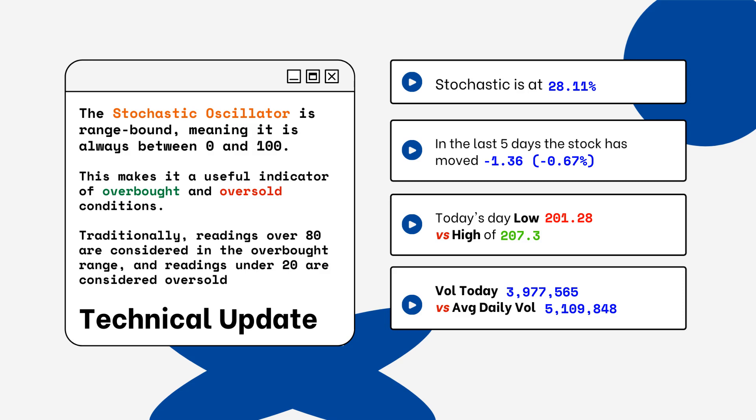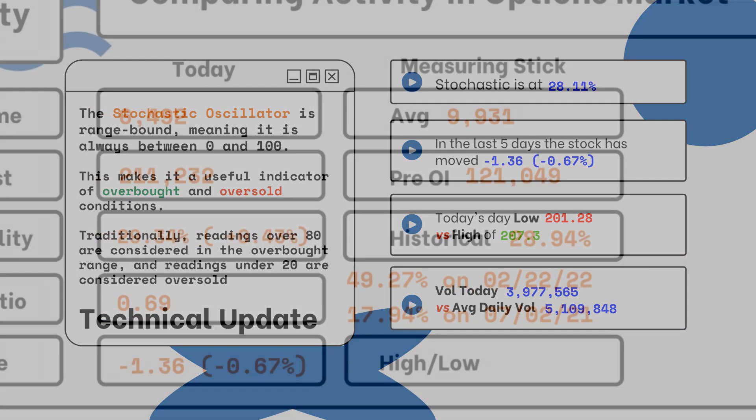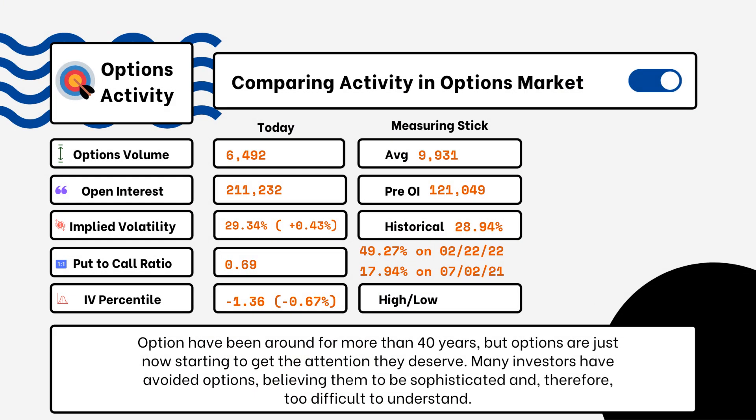We've also provided today's volume of shares traded and also the average daily volume. You want to see how much volume is being traded and if it is above or below the average daily volume level. This tells you how relevant the move is from the stock today.